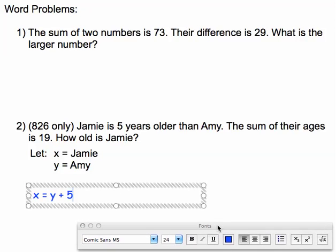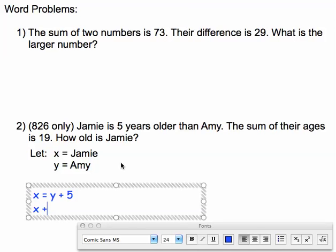In addition to that, I know that the sum of their ages is 19. So if I take x and I add it to y, I get 19.